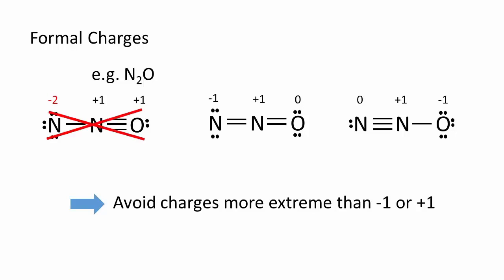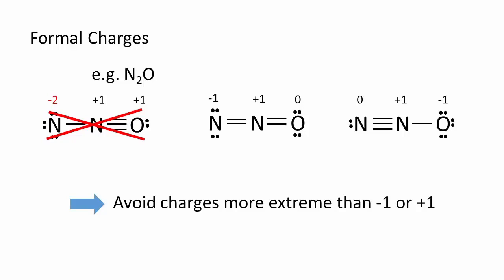Of the last two, both seem equally good. However, it is best to place a negative charge on the most electronegative atom. Oxygen being more electronegative than nitrogen, the third Lewis dot structure is the best.